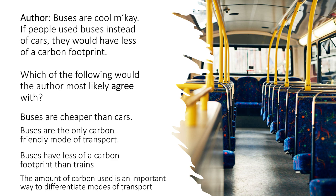Now we're moving on to official examples. Think about this: if you were a test maker, you have to find ways to disguise the right answer. You can't have obviously wrong answers — every student would spot those. The ways they disguise it are: picking plausible off-topic answers, using extreme language, making false comparisons, or throwing in hard words.